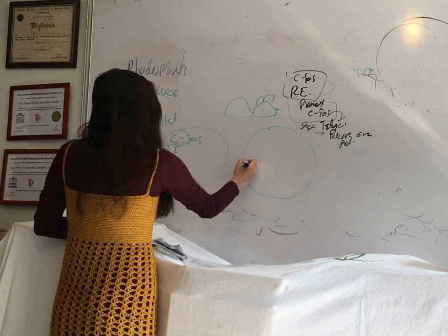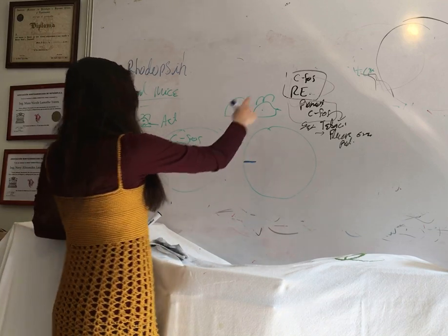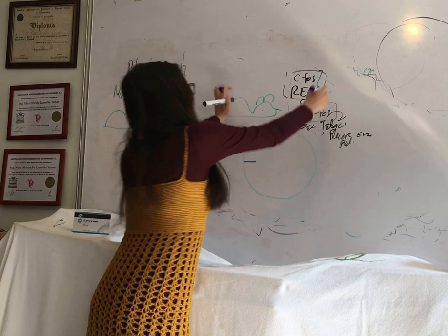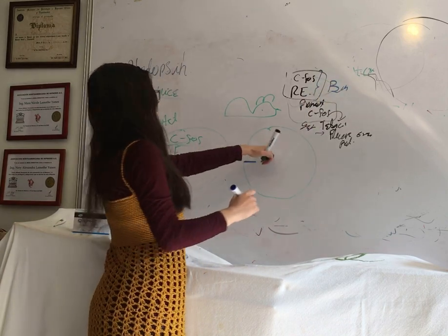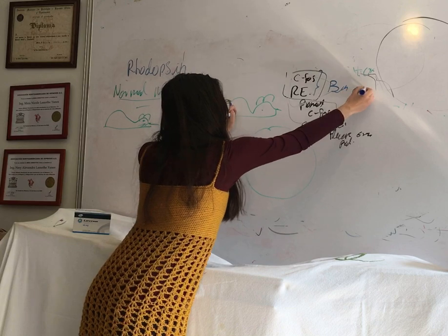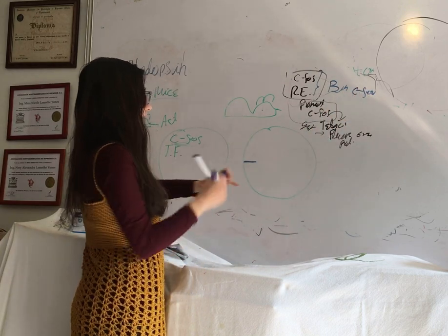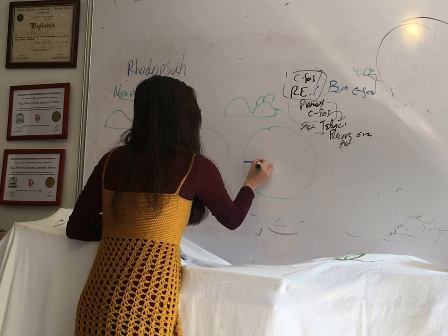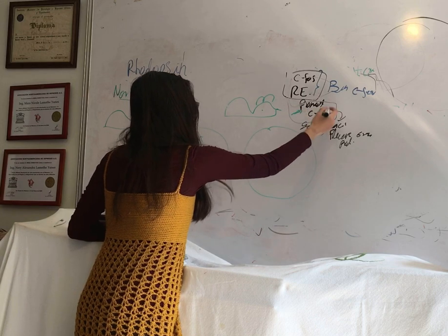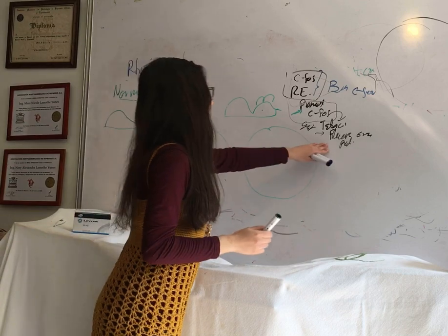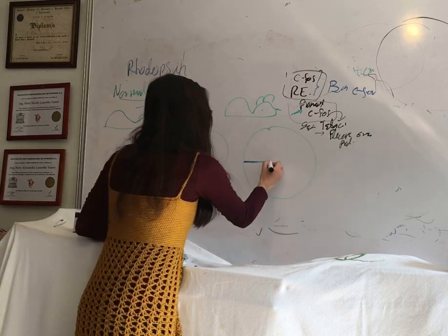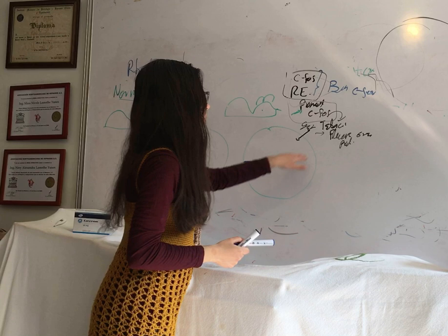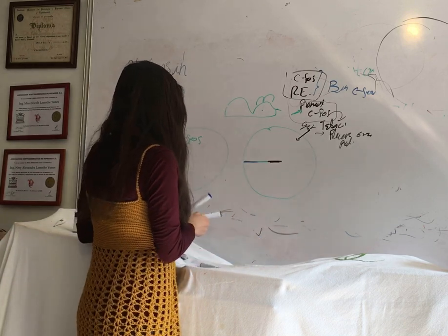In blue, this is going to be the c-fos response element — this sequence of DNA is the binding site for c-fos. So c-fos is going to bind here. Next we are going to have the c-fos promoter here. Then we are going to have the gene that encodes for tetracycline, and also the gene that encodes for a fluorescent green protein.